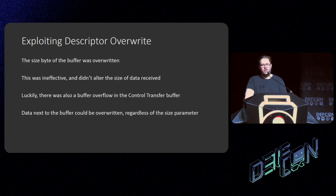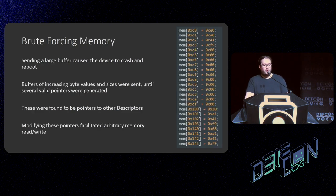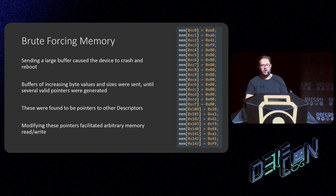I tried to overwrite that first byte by sending data to the same memory location. However, this was ineffective — it did change the byte, but it didn't alter the size of the data received. Luckily, there was just a buffer overflow there anyway. Because of this, the data next to the buffer could be overwritten. By sending a large buffer that caused the device to crash, I knew I had a traditional buffer overflow. I did a binary search until I found a data size that didn't crash the device, then made that size one byte larger and changed the value of that last byte, incrementing by one until I found a value that didn't crash — essentially brute-forcing my way up the adjacent memory.